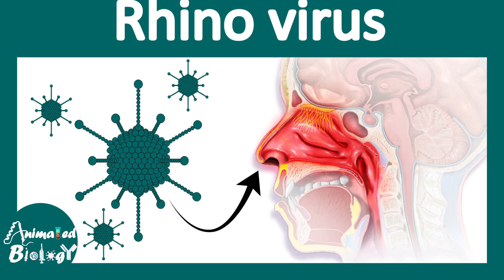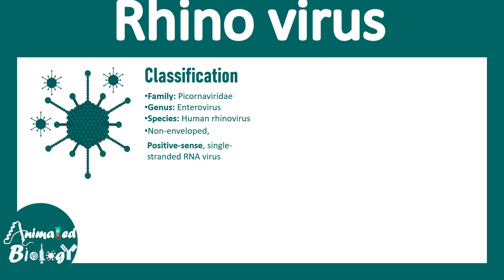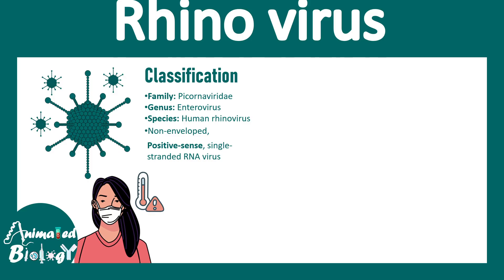In this video we'll talk about rhinovirus. 'Rhino' means nose, so it relates to rhinitis or inflammation of the nose. Rhinovirus is the culprit behind the common cold. It belongs to the Picornaviridae family, genus Enterovirus, species Human rhinovirus. It is non-enveloped — a naked virus — and has positive-sense single-stranded RNA as its genome.